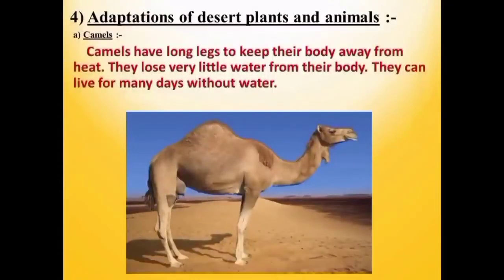The presence of specific features or certain habits which enable a plant or an animal to live in its surroundings is called adaptation. Now let us see the adaptations of desert plants and animals by taking an example of a camel. Camels have long legs to keep their body away from heat. They lose very little water from their body and can live for many days without water. That is why the camel is called the ship of the desert.